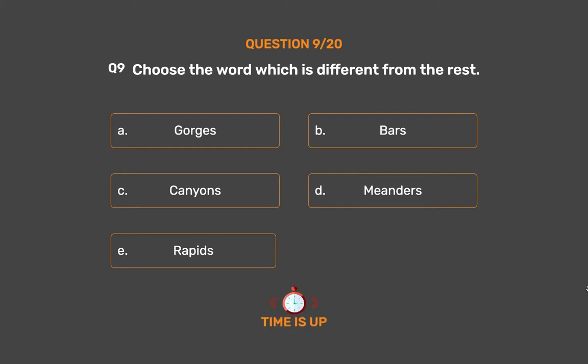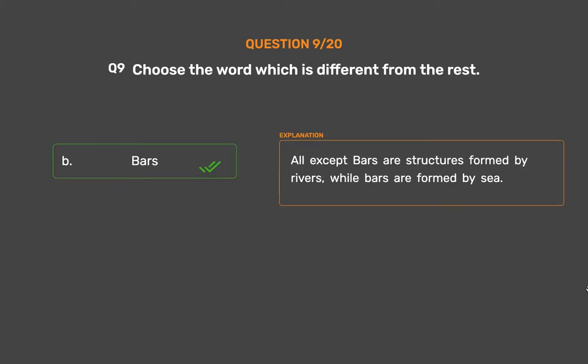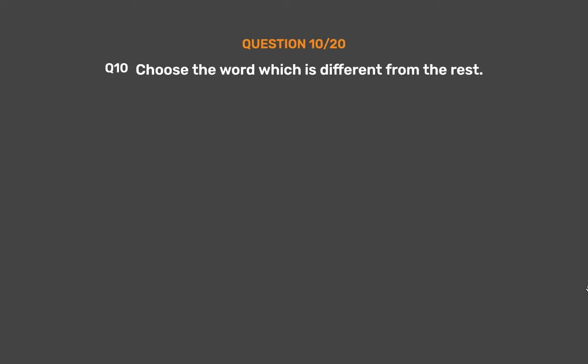The correct answer is Option B: Bars. All except Bars are structures formed by rivers, while Bars are formed by the sea.